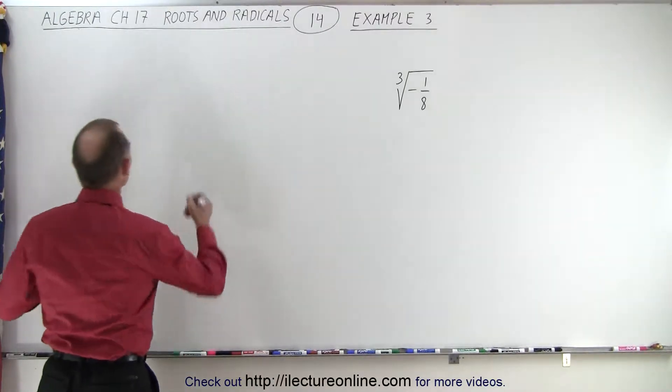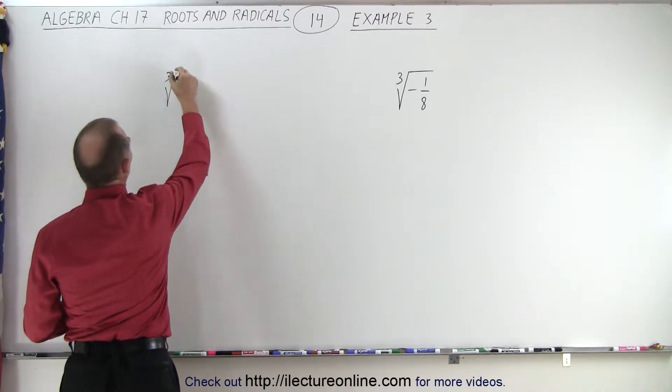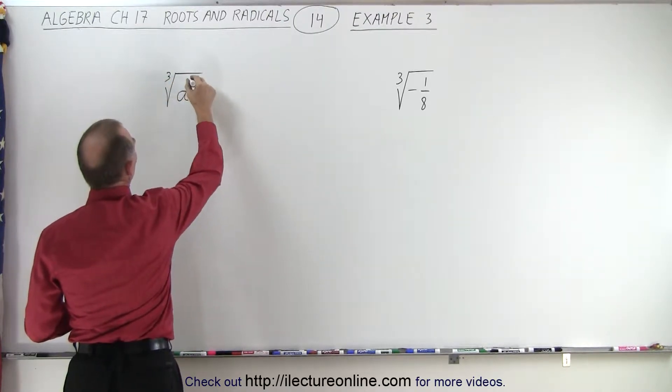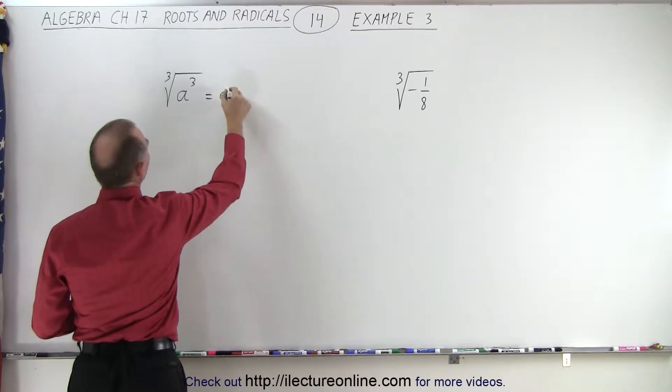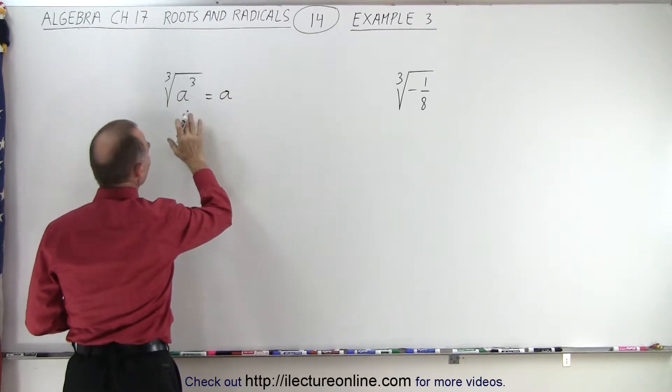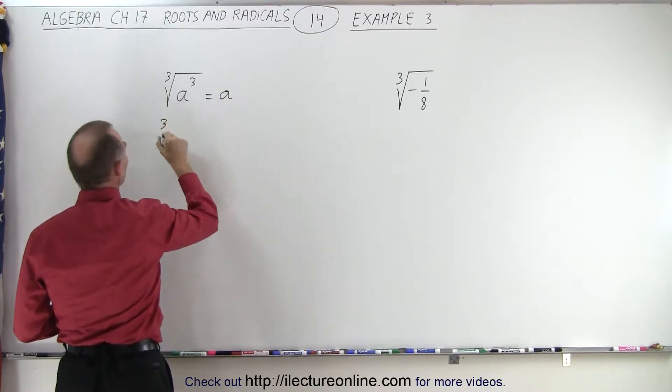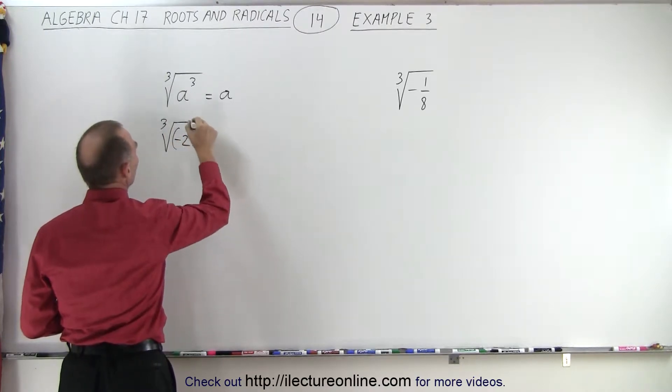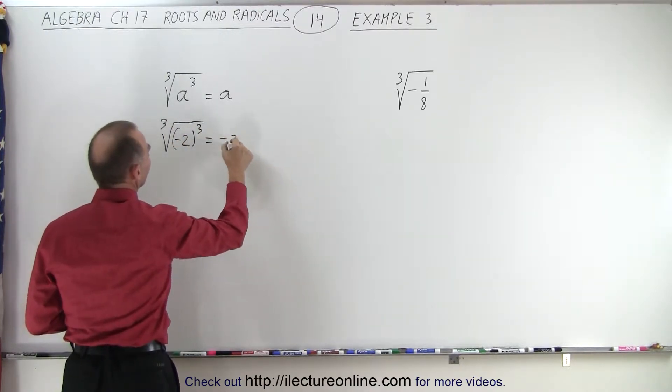Now if I remember right with the rules, if we take the cube root of a to the third power, that is equal to a. And so therefore, if a is a negative number, for example the cube root of negative 2 to the third power, that is equal to negative 2.